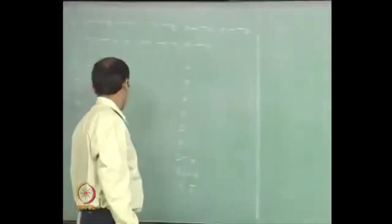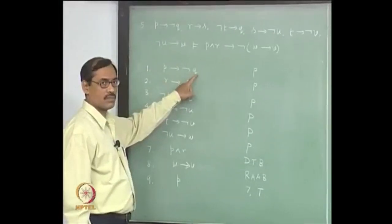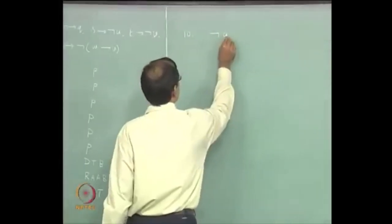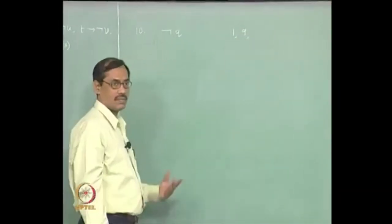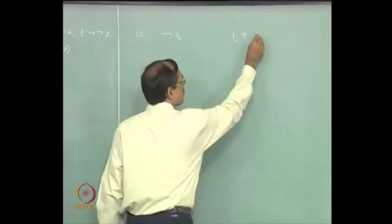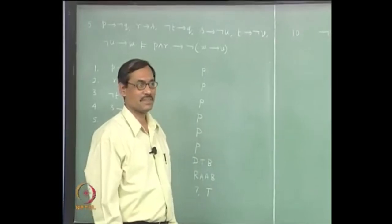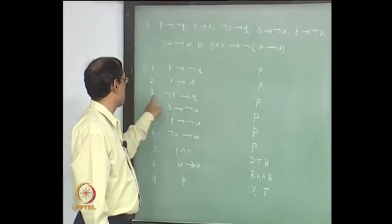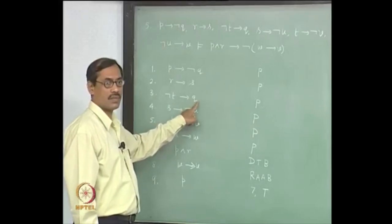Then our plan is to use this p along with p implies not-q and use modus ponens. So that gives you not-q from line 1, line 9 and modus ponens. Even if you do not remember modus ponens, you are allowed to write T. Now, try to see wherever q appears. It is in the third line: not-t implies q, and you have not-q. So you can use modus ponens.